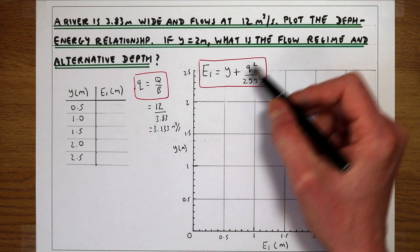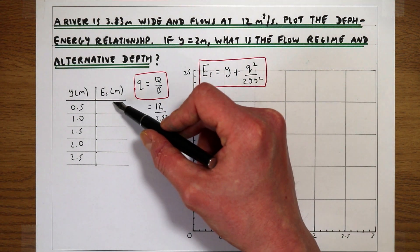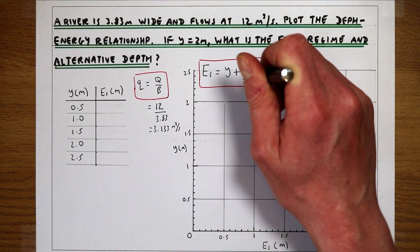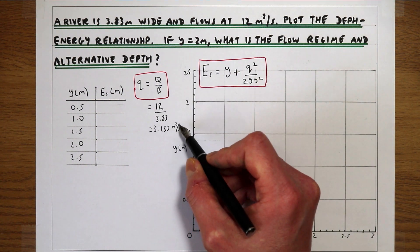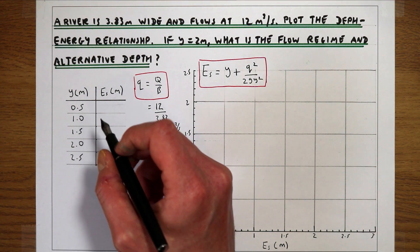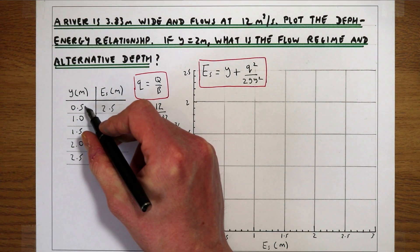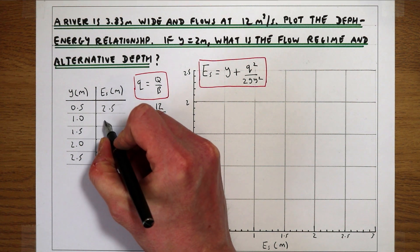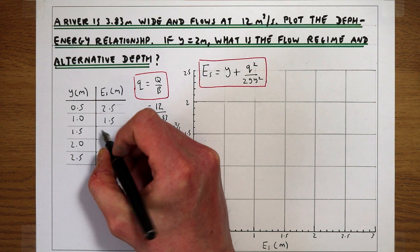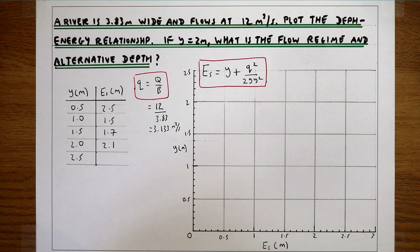That now becomes a constant we can plug into the equation, so the only thing varying as we do this calculation is the value of y. Plugging q = 3.133 m²/s into the equation with different values of y, we get: at y = 0.5, E_s = 2.5; at y = 1, E_s = 1.5.